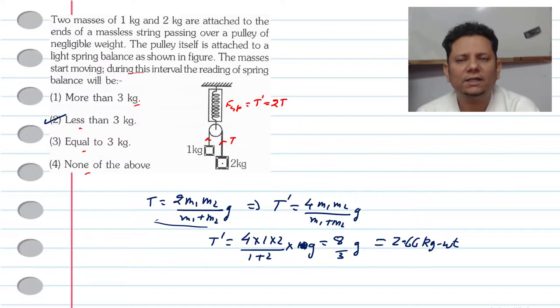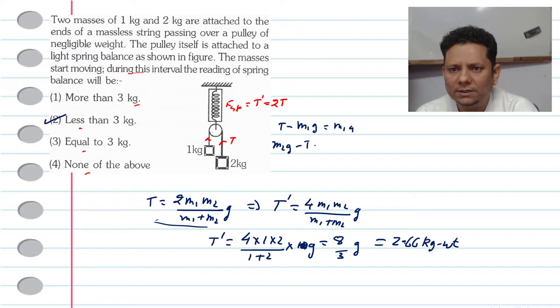But I always suggest that we draw the FBD. T minus M1G is equal to M1A. If you keep the value here, M2G minus T is equal to M2A.